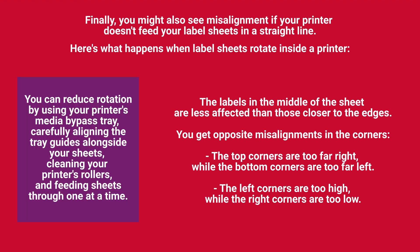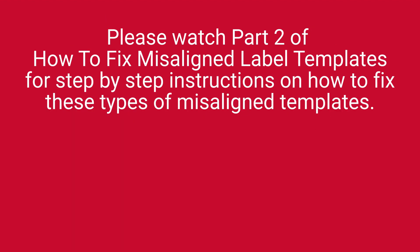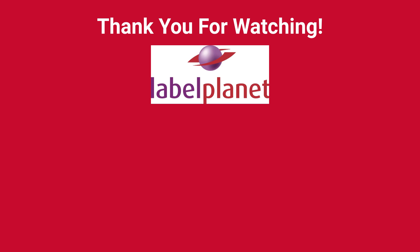You can reduce rotation by using your printer's media bypass tray, carefully aligning the tray guides alongside your sheets, cleaning your printer's rollers, and feeding sheets through one at a time. Please watch Part 2 of How to Fix Misaligned Label Templates for step-by-step instructions on how to fix these types of misaligned templates. Thank you for watching.